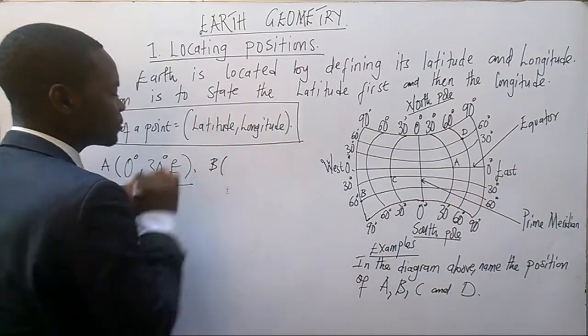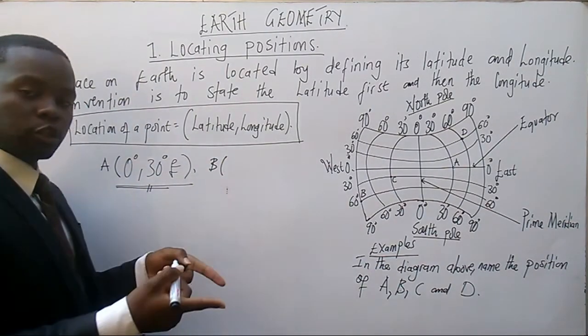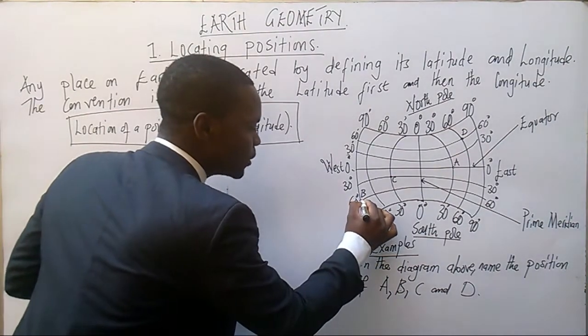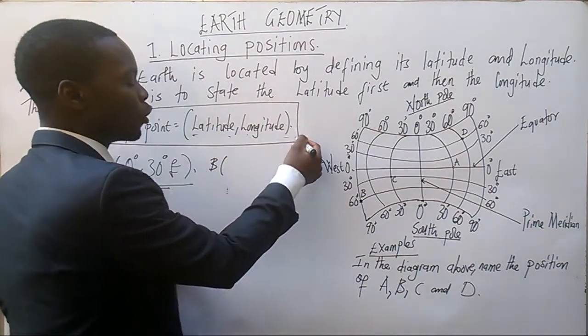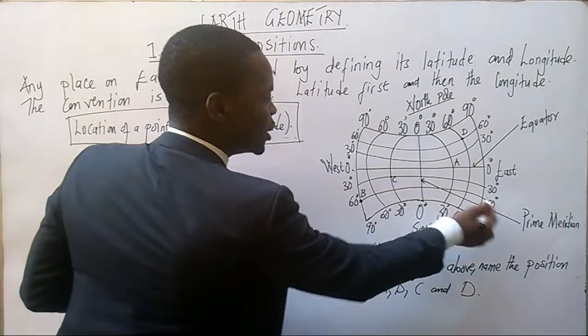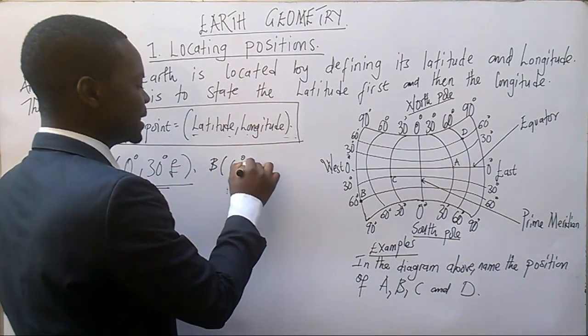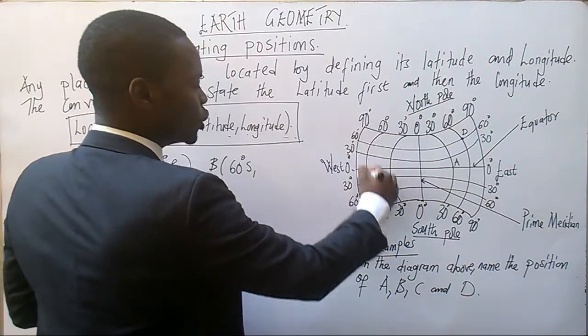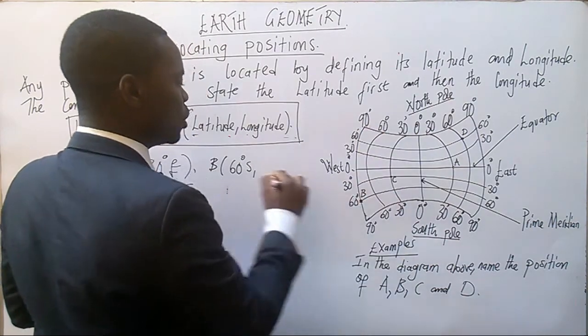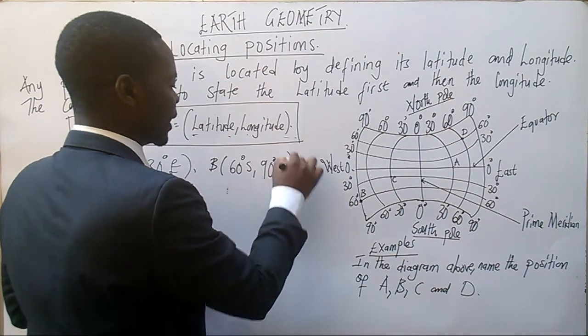Then we go to B. To B again, we must first locate it. This is our B. From there, we must state our latitude and our longitude. This is our latitude, which is 60 degrees south, comma. What's our longitude? This is our longitude, which is 90 degrees west.